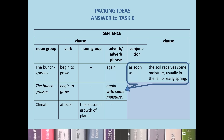An adverb phrase that packs the information 'as soon as the soil receives some moisture, usually in the fall or early spring' is 'with some moisture.' So, 'the bunch grasses begin to grow again with some moisture' is a more abstract version of the conjunction and clause in the upper sentence.